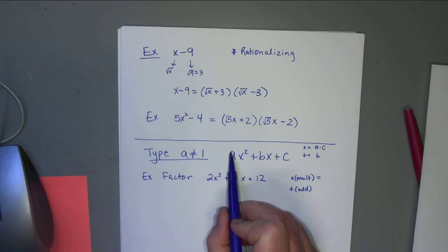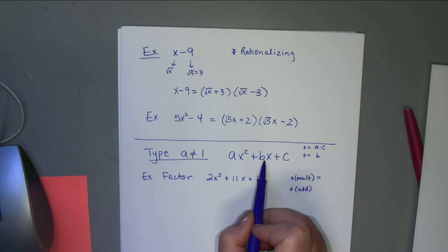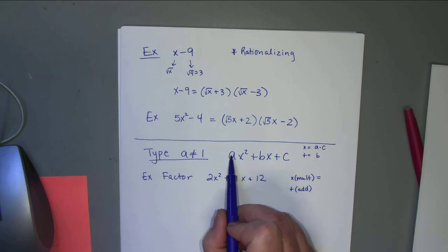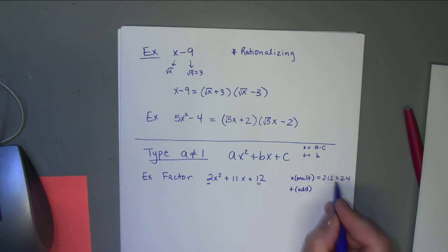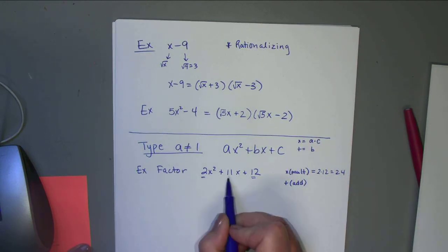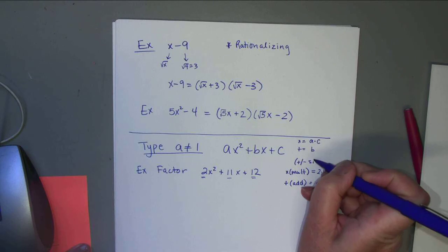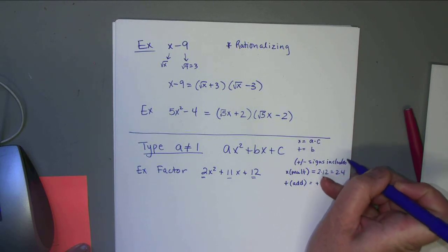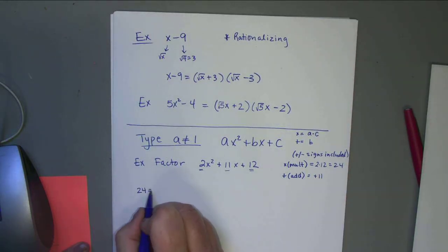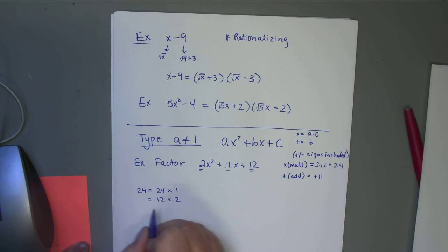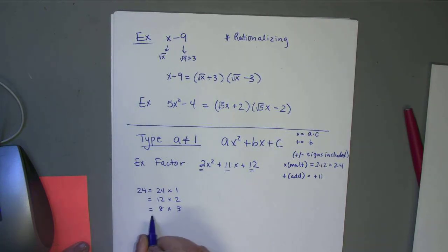In this example, a×c = 2×12 = 24. So we want two numbers that multiply to give 24 and add to give 11. Options: 24×1, 12×2, 8×3, 6×4. These all multiply to 24. Checking sums: 24+1=25, 12+2=14, 8+3=11 — that works! 6+4=10. So 8 and 3 are the numbers we want.